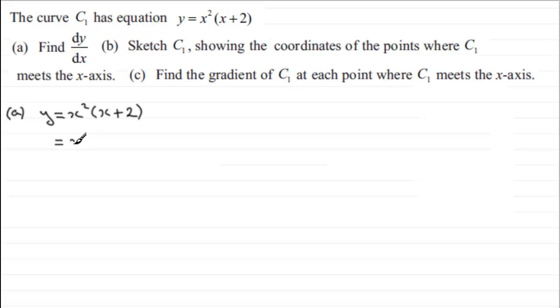So if we expand the bracket, x squared times x is going to be x cubed. And then you've got x squared times the 2 which is 2x squared.